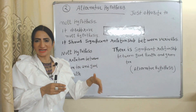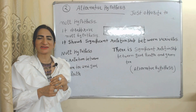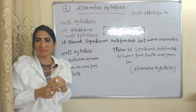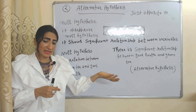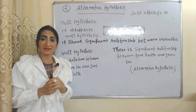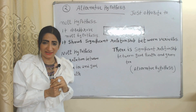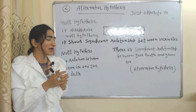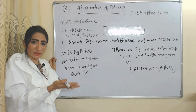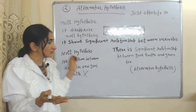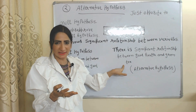For example, my null hypothesis was there is no relationship between green tea and good health. But when I do my research and collect data from so many people, most people are saying their health is improving after taking green tea. That means there is some relationship between green tea and good health, so I will reject my null hypothesis and make an alternative hypothesis showing there is a significant relationship between good health and green tea.